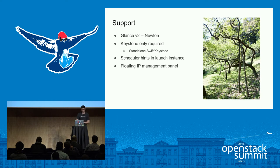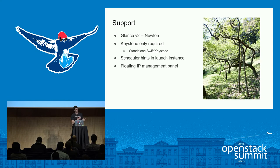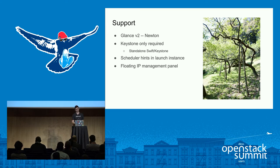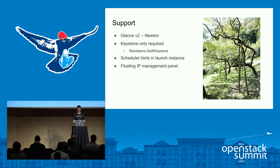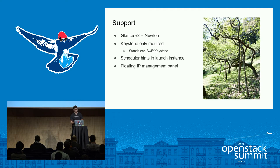Another feature we've added is making Horizon depend only on Keystone. Whereas before we had small dependencies on things like Nova, you can now run nothing but Keystone and whatever service panels you want — for example Keystone and Swift, which is a relatively common use case. We've also added scheduler hints in the launch instance wizard, a floating IP management panel in the admin dashboard, and consistency group support for Cinder.